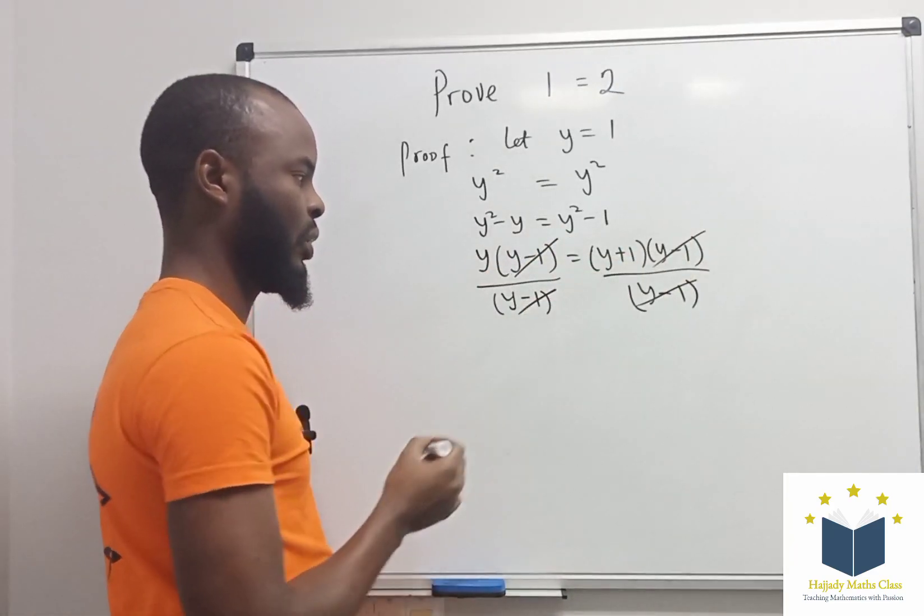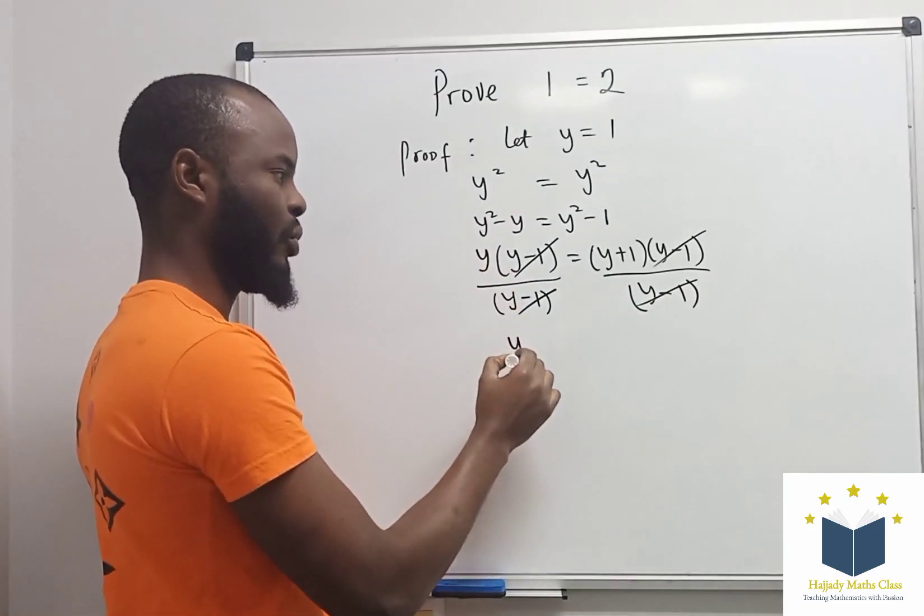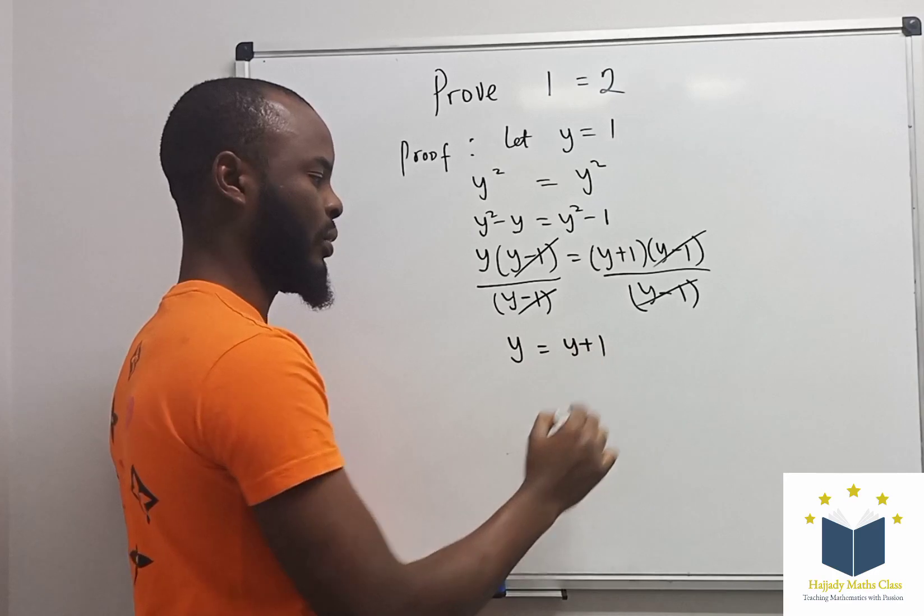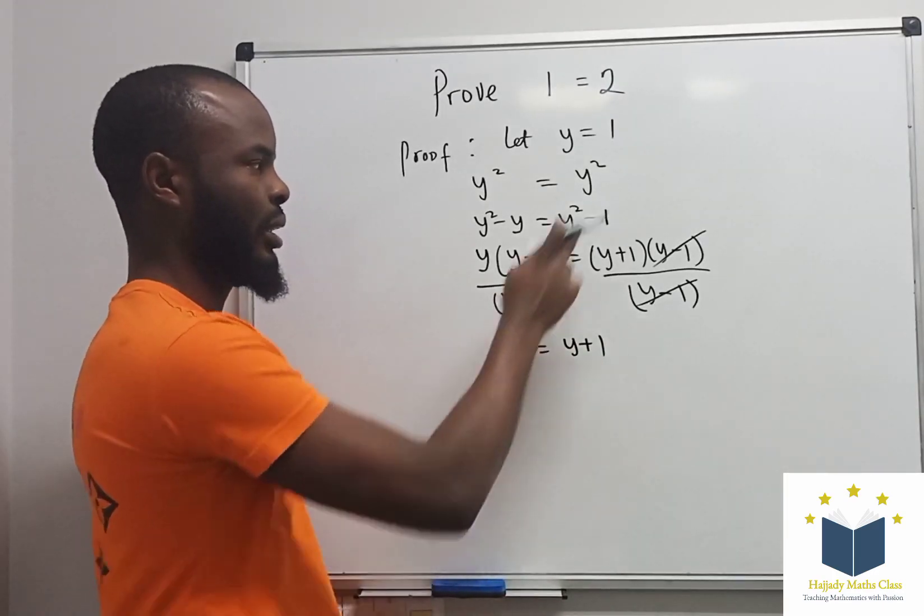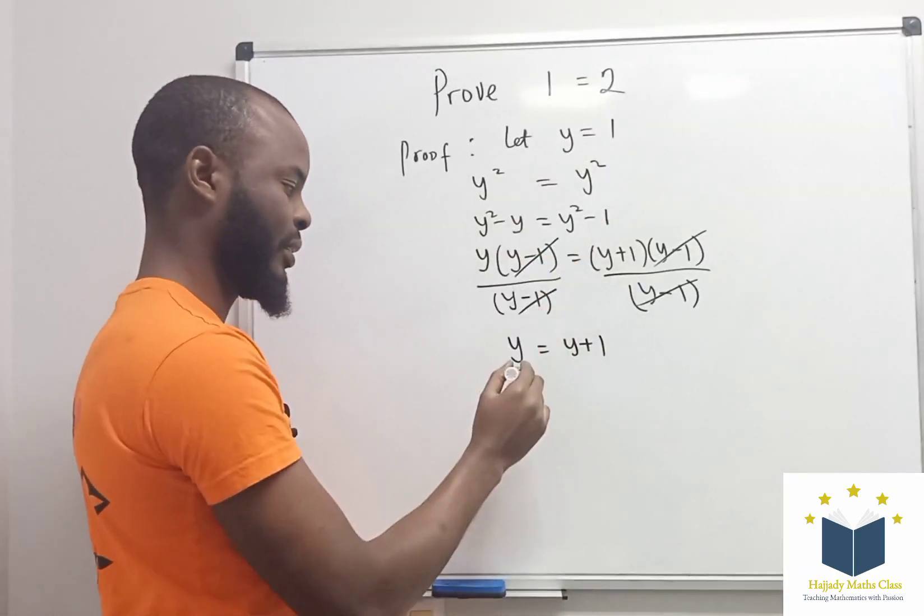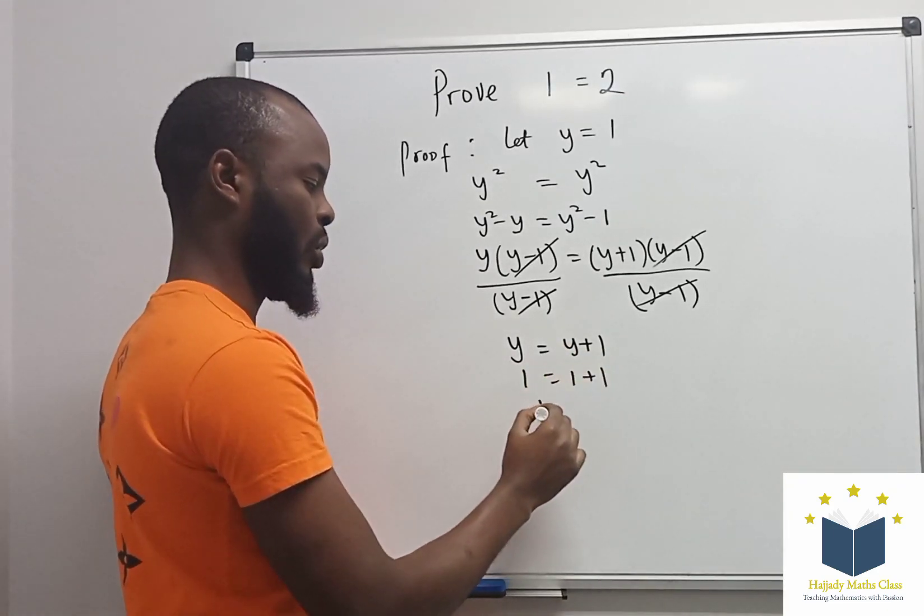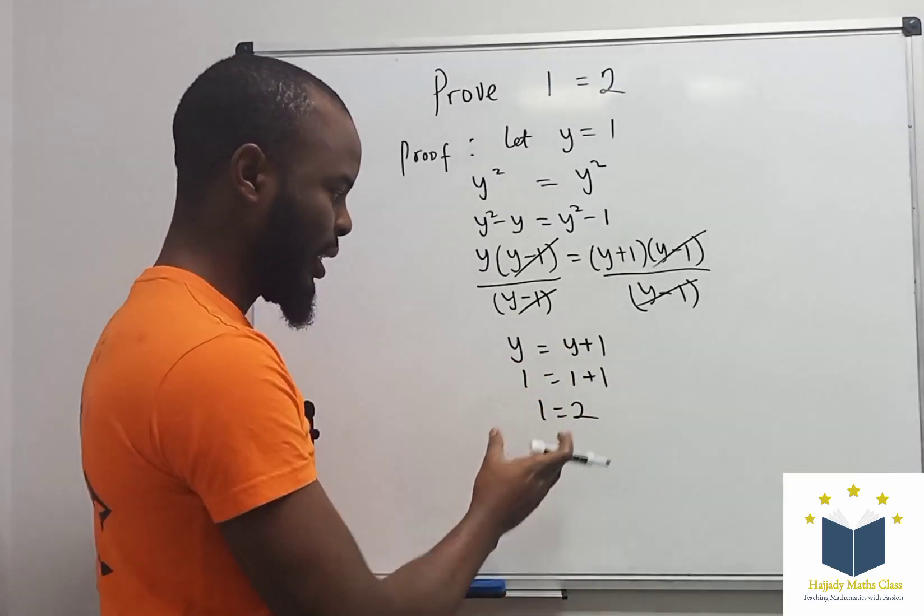After dividing out, on the left-hand side you have y, on the right-hand side you have y + 1. What is y? y is 1, so 1 = 1 + 1, which means 1 = 2.